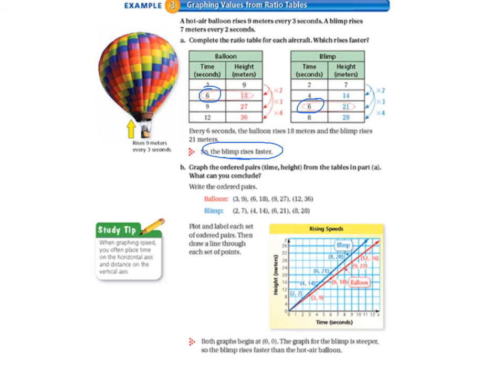So we plot and label. So we go across to 3 and then up to 9, across to 6 and up to 18, across to 9 and up to 27 and across to 12 and up to 36 and then we connect those dots. You would be using a ruler. And then to do the blimp we would do the same thing with those ordered pairs.